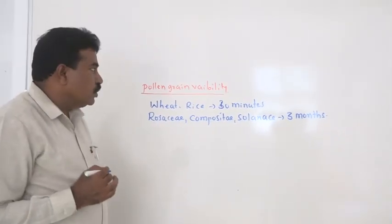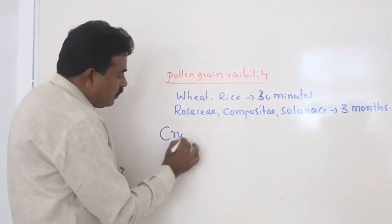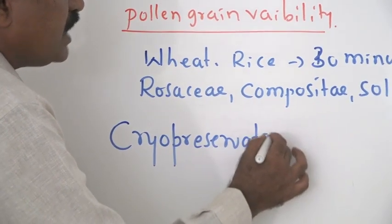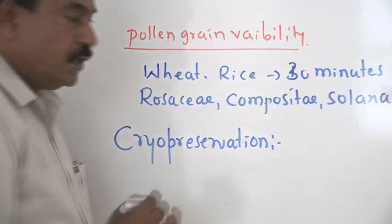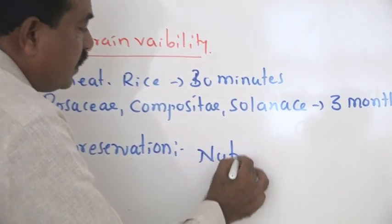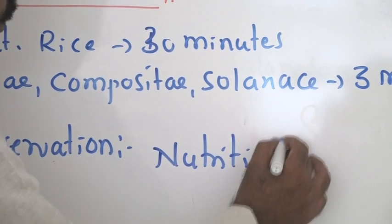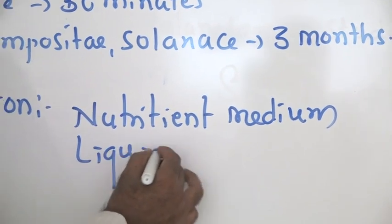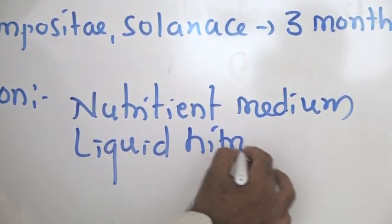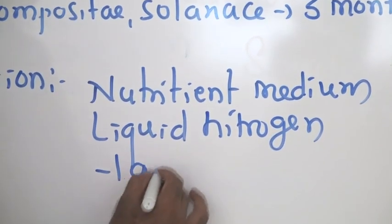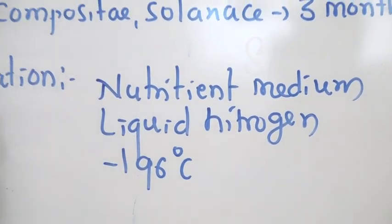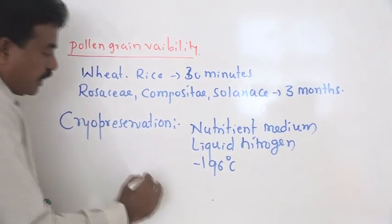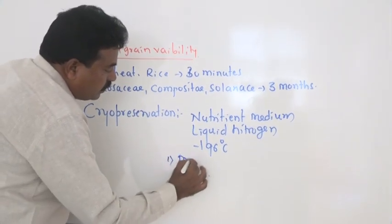In artificial plant breeding technique today, we can preserve pollen grain by cryopreservation technique. It is a specialized artificial method of pollen grain preservation where pollen grains are preserved under nutrient medium with liquid nitrogen as the base under minus 196 degrees centigrade temperature.